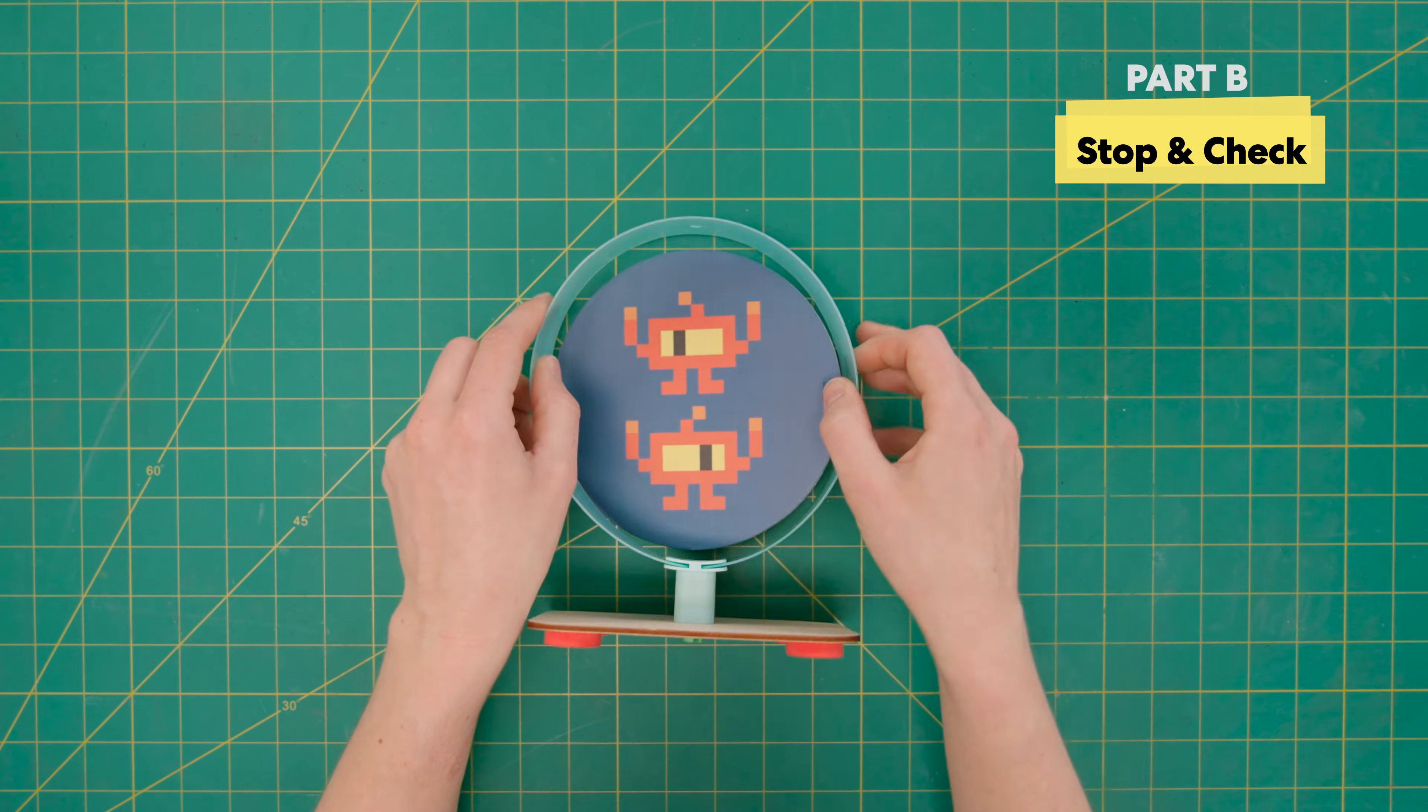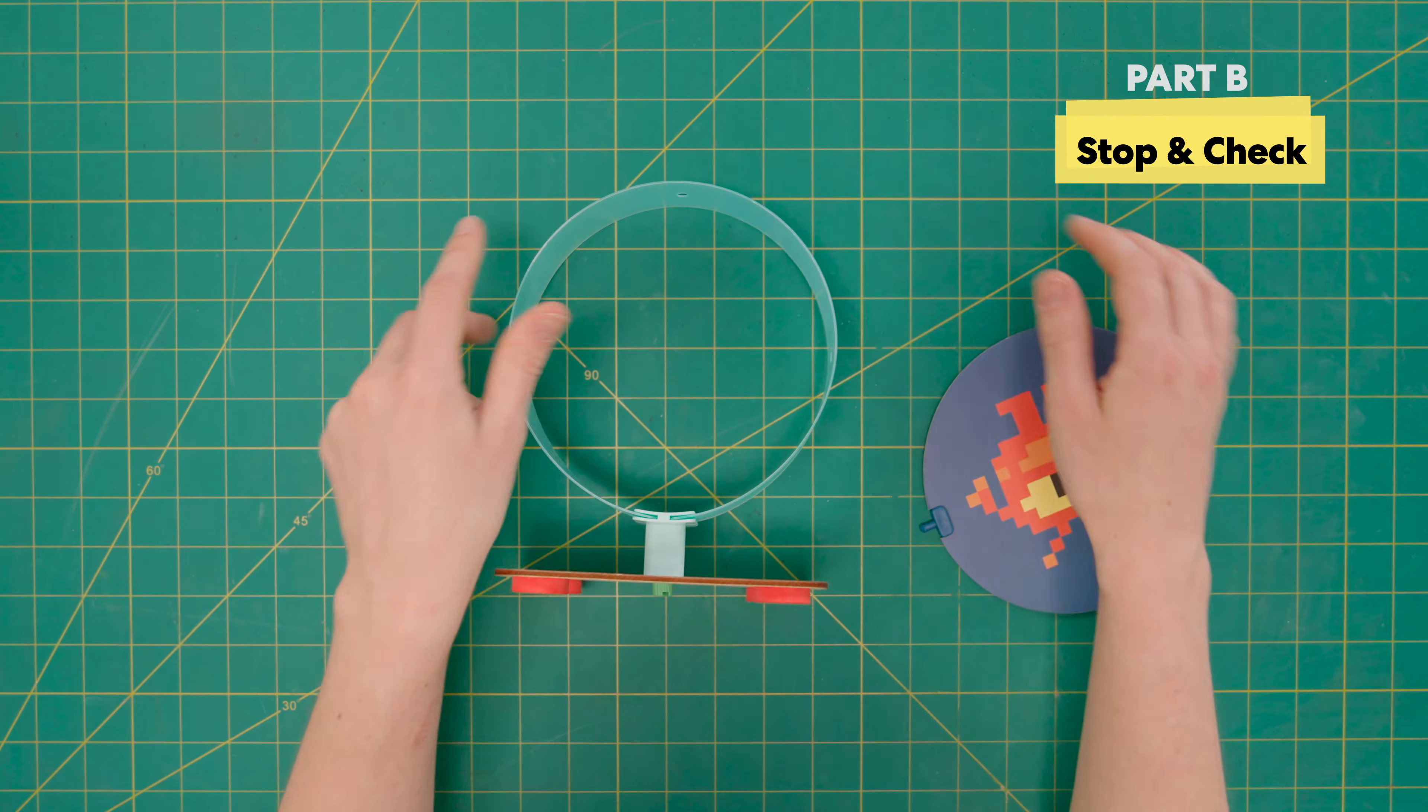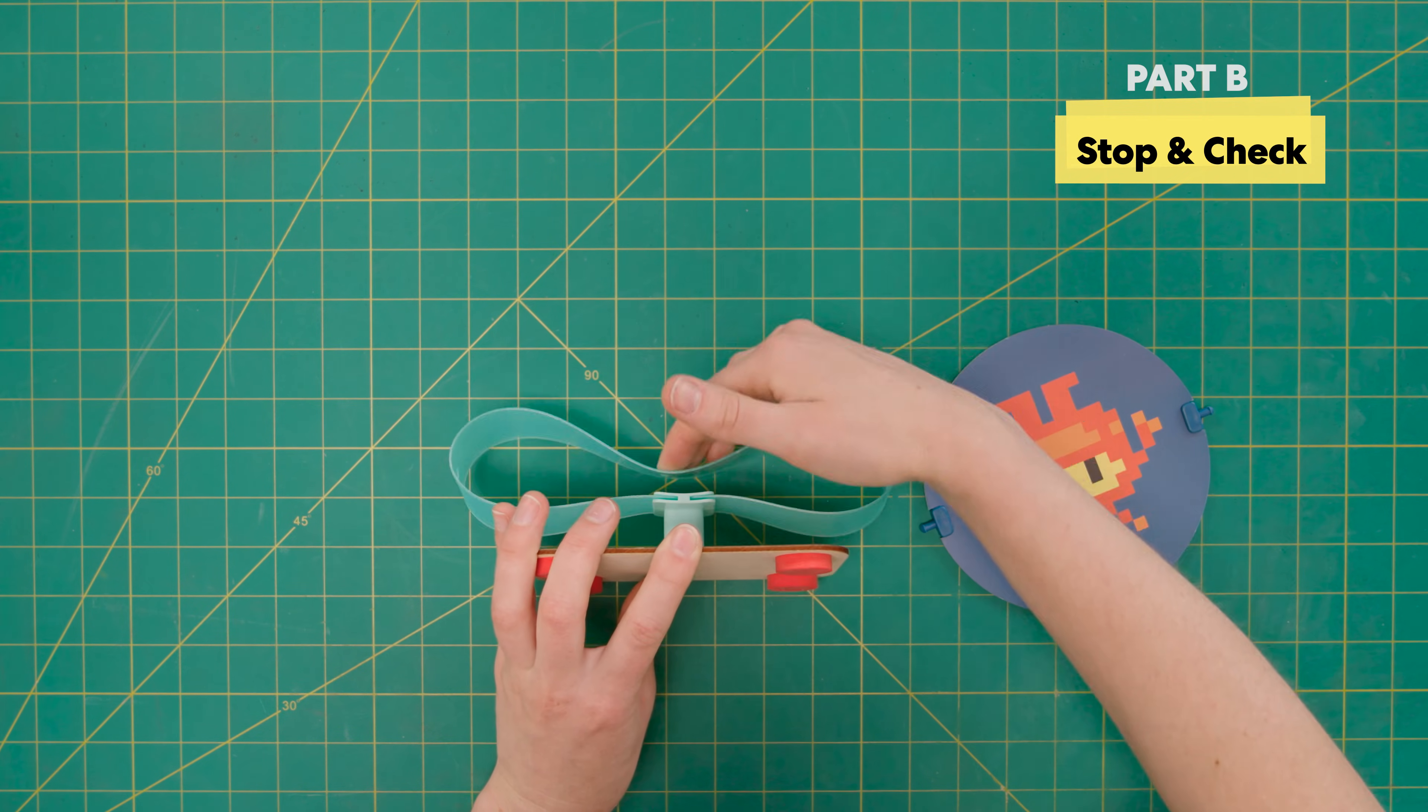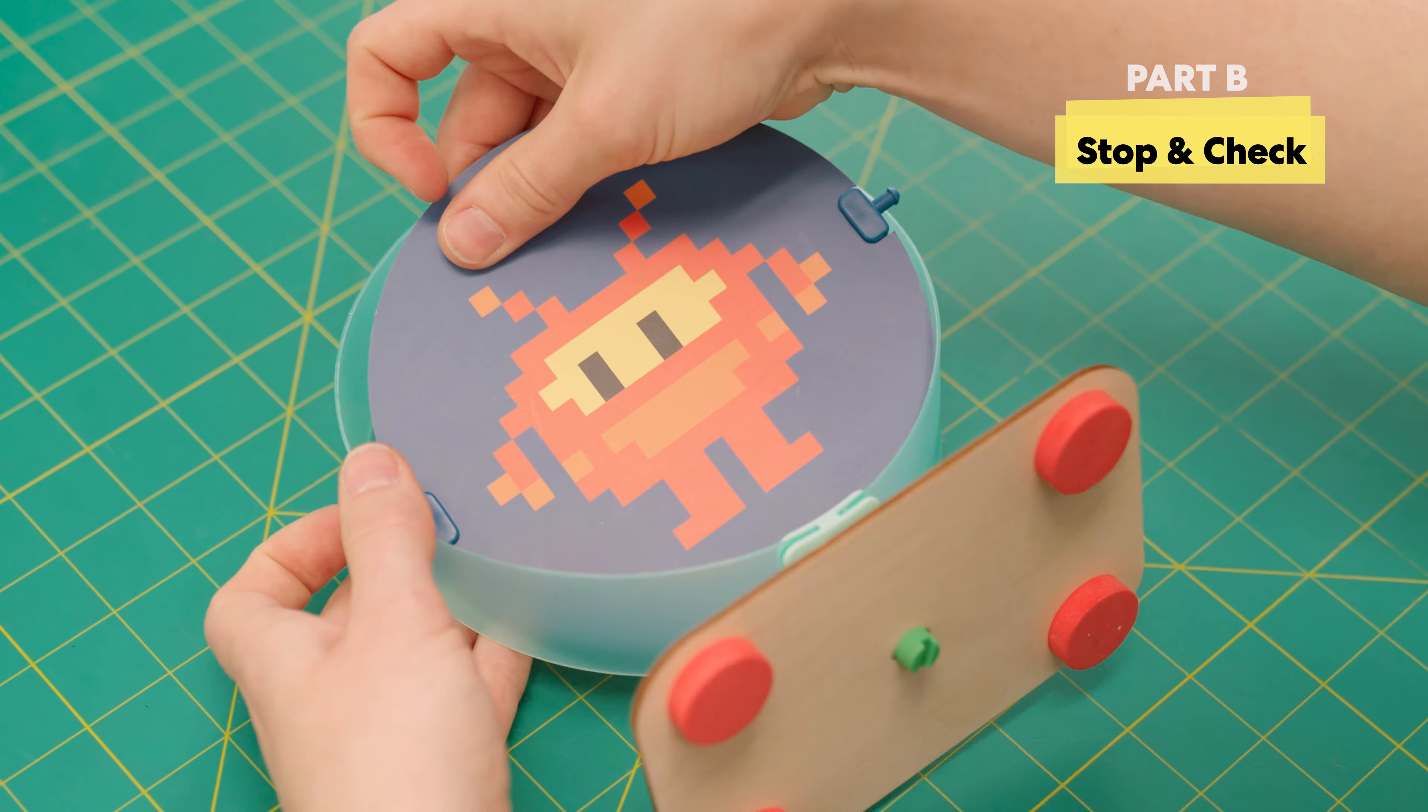Make sure the target can spin. If the paper rubs on the plastic ring, take it out and push on the plastic to make a more perfect circle. Then, pop it back in.